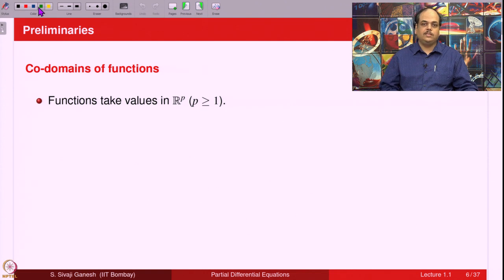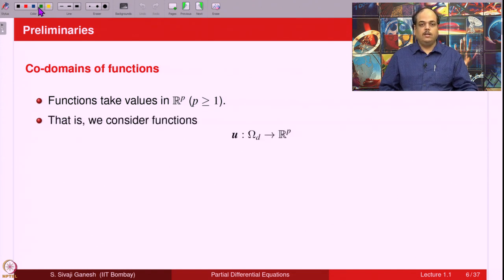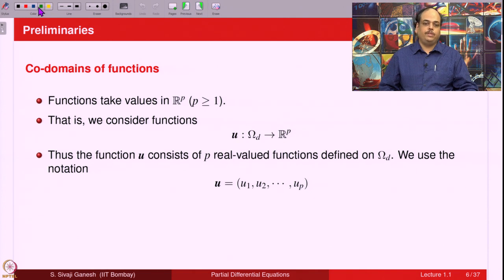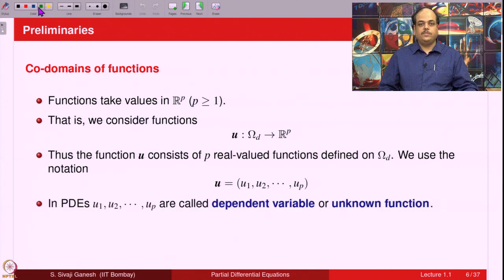Now that we have discussed the domains of functions, let us discuss the co-domains of the functions we are going to deal with. The co-domain means the values the function takes. We assume that the functions take values in R^p, p greater than or equal to 1. That is, we consider functions u defined on omega_D taking values in R^p. Thus, the function u consists of p real-valued functions defined on omega_D, written as u = (u₁, u₂, ..., u_p). These are called coordinate functions. In partial differential equations, u₁, u₂, ..., u_p are called dependent variables or unknown functions.